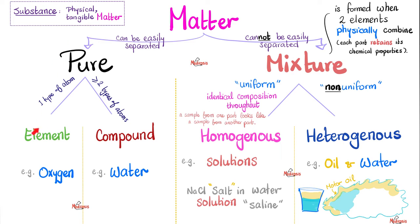Pure matter could be element or compound. An element has one type of atom, such as oxygen — I have only oxygen here. But if I have two or more types of atoms, that's a compound, like water. Water has two types of atoms: hydrogen and oxygen.